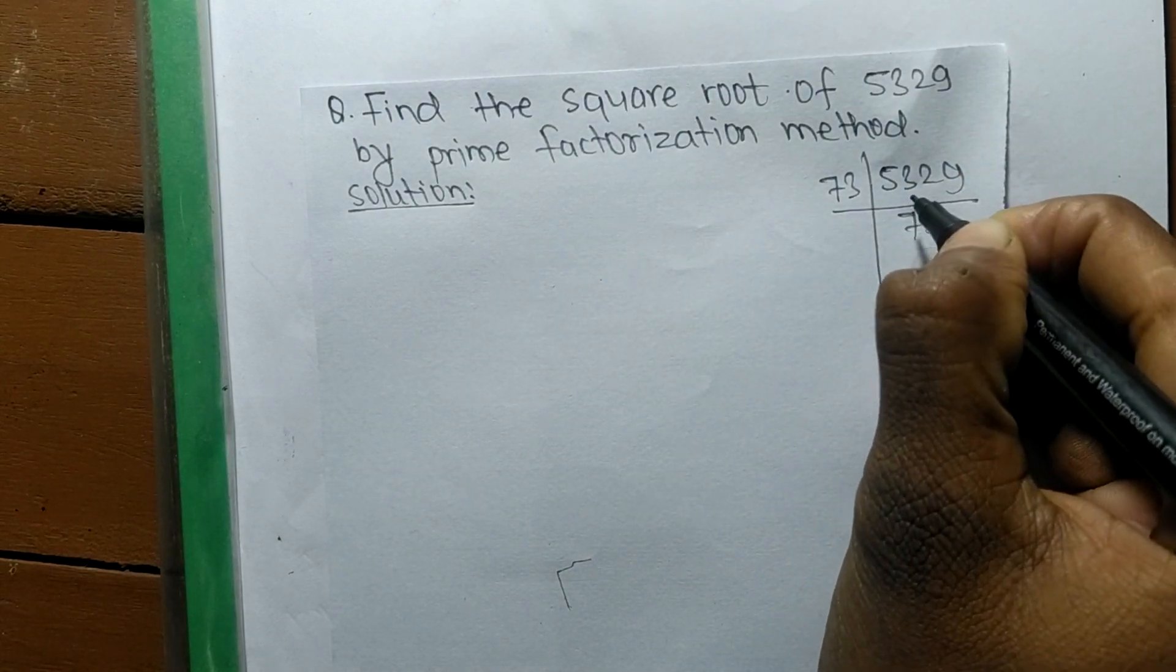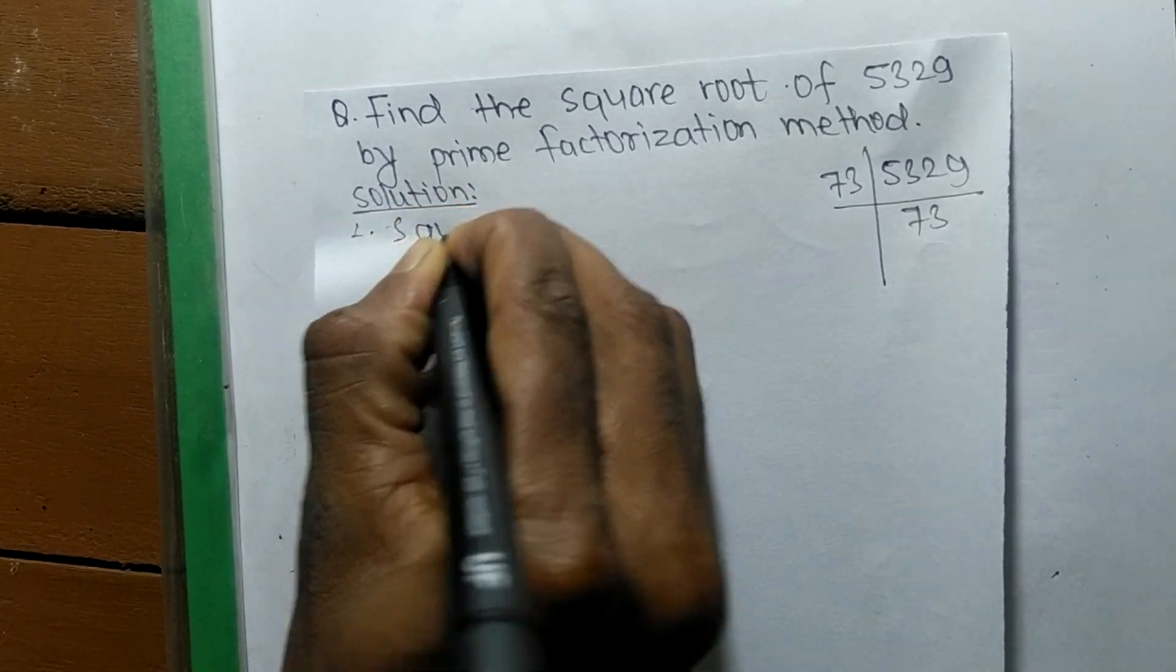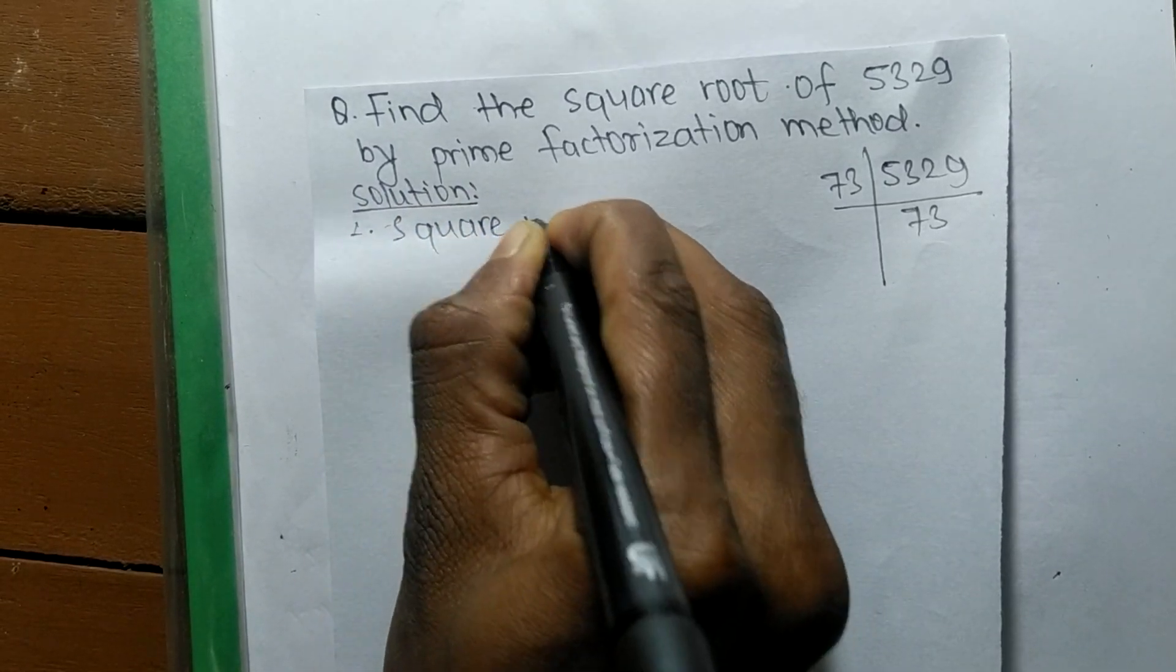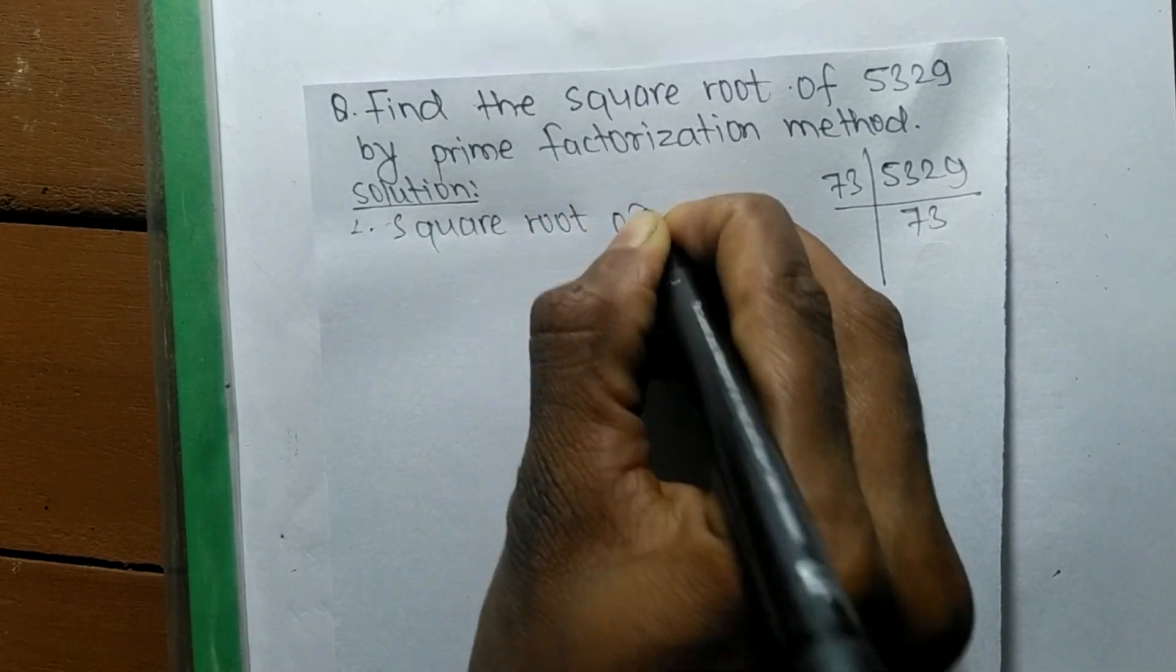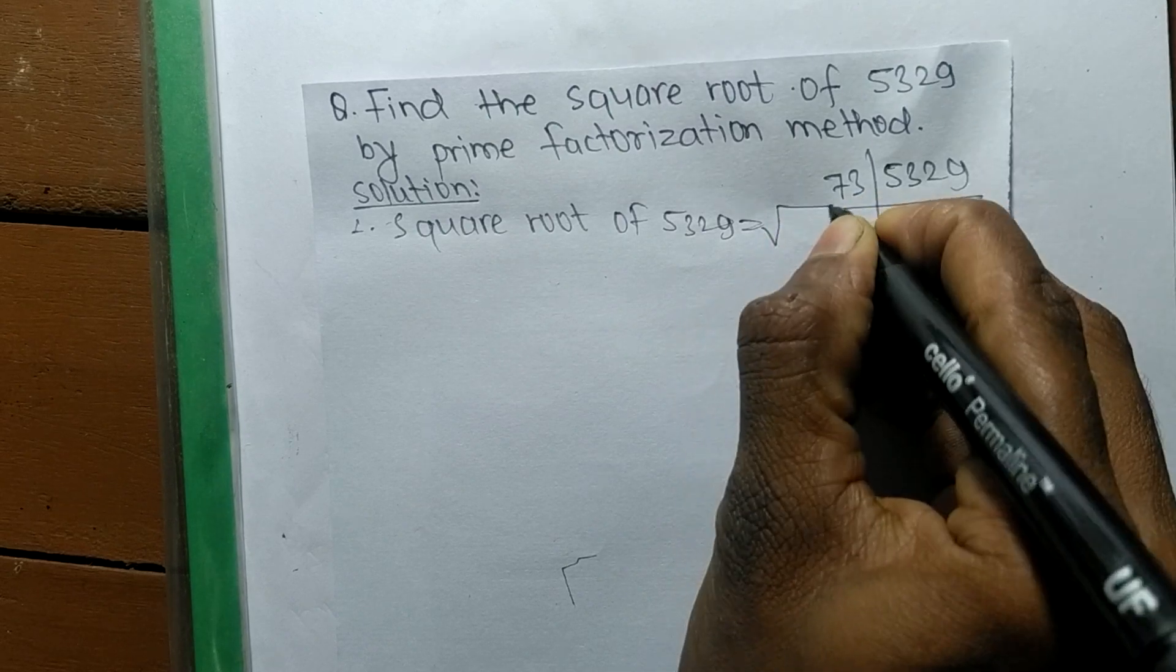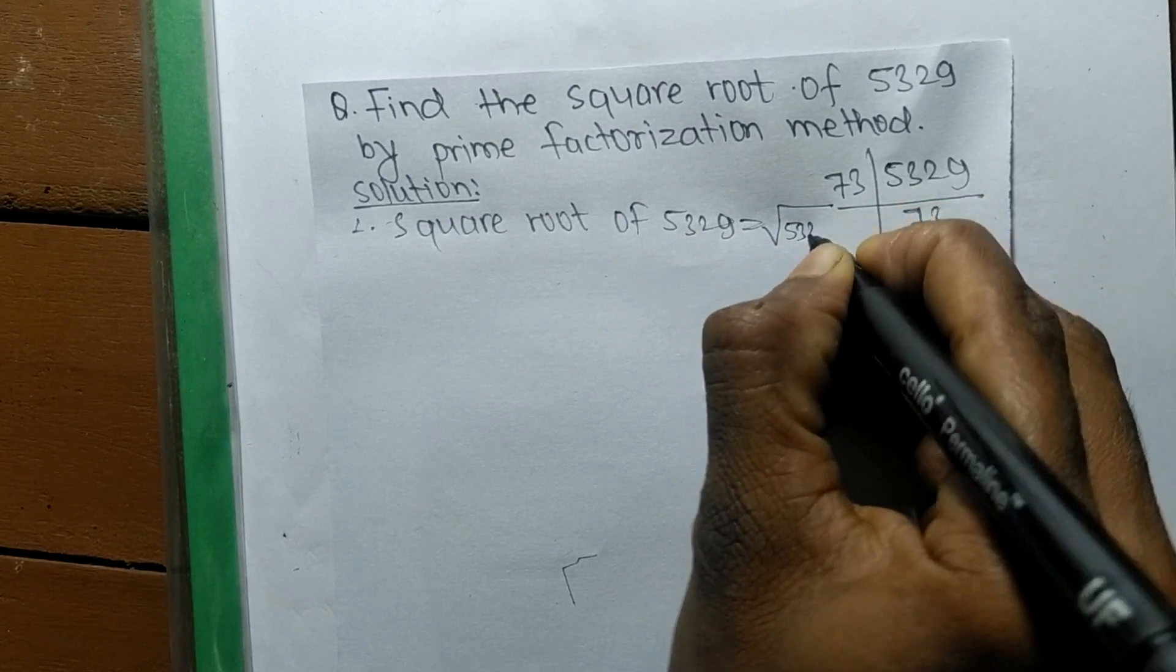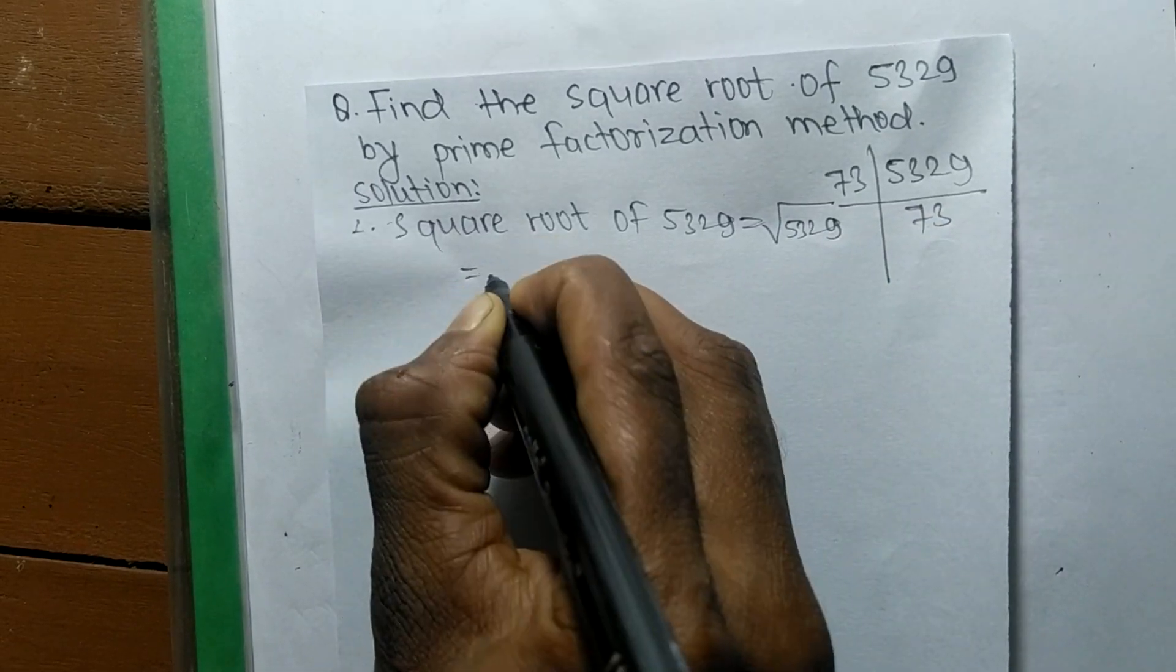So now we find out its square root. The square root of 5329 is equal to—this sign is the sign of a square root—the square root of 5329.